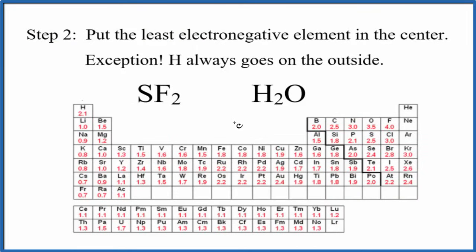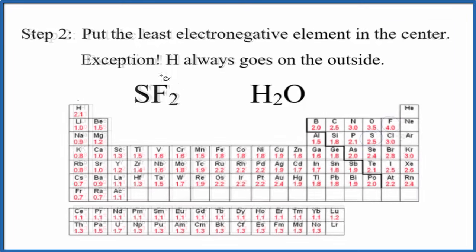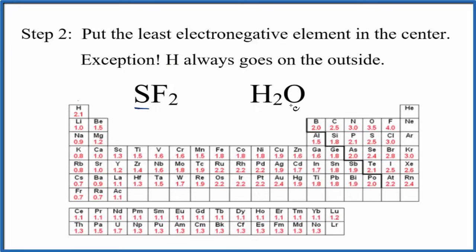Pause and identify which element in SF2 and in H2O will go in the center of the Lewis structure. For SF2, sulfur is less electronegative than fluorine, so sulfur goes in the middle. For water, oxygen right next to fluorine is very electronegative, but hydrogens always go on the outside — so with H2O, the oxygen will go in the center of our Lewis structure.